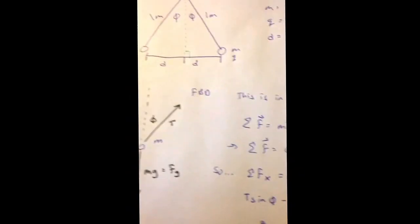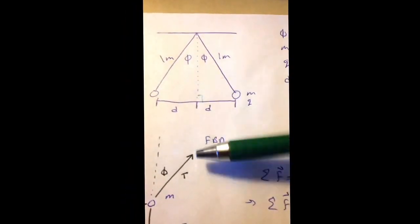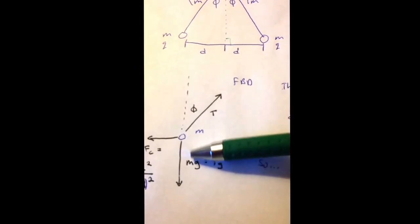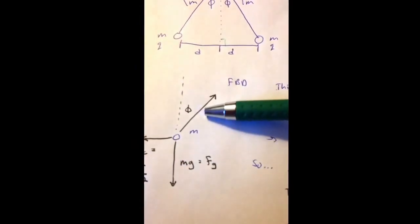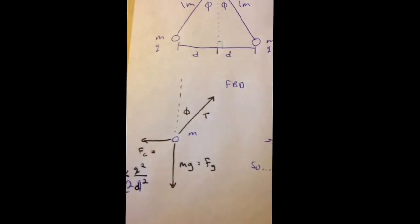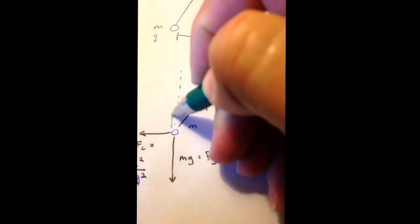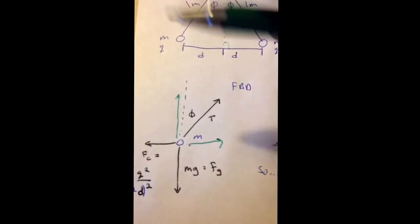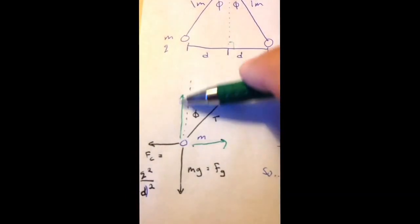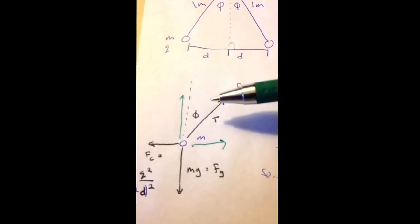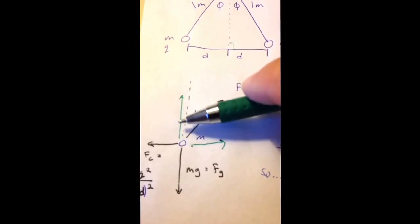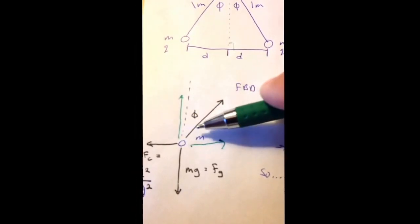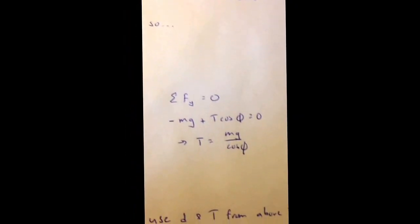I'll do the y's first. If you notice, in the y direction, which will be this way, all I've got, I've got the force of gravity, and then I've got this component of the tension that goes up, kind of like this. There's a component that way, and a component this way in the x direction. So what I'm going to do is I'm going to look at this one, because we're looking at the y direction. And from trig, this component is going to be T cosine of phi. So I've done that over here, when I'm summing my forces in the y direction.